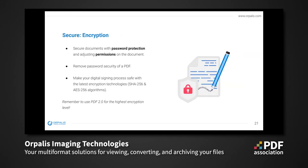Encryption relates to password protection and permissions. You can make your digital signing process safe with the latest encryption technology, like the SHA-256 hash algorithm and AES-256 algorithm. To get the best encryption level for your PDFs, you need to use the latest versions, especially PDF 2.0, which includes the highest level of security.